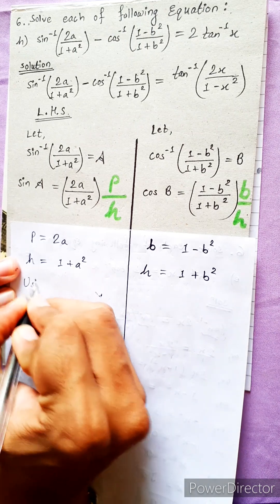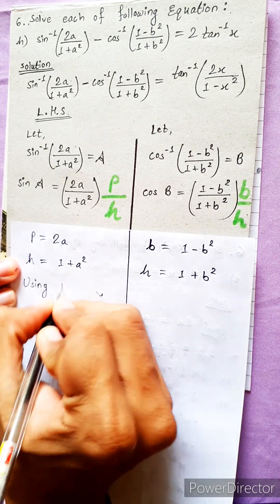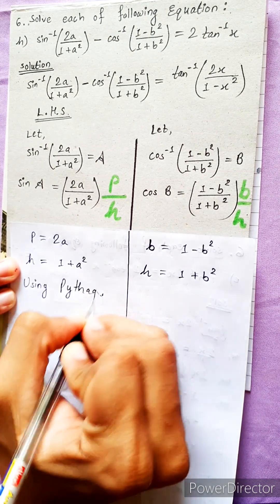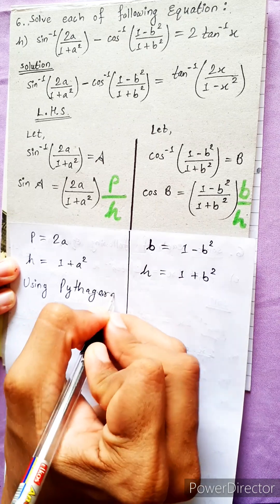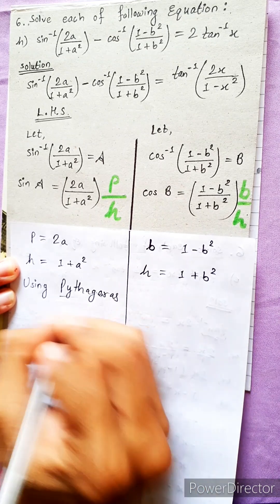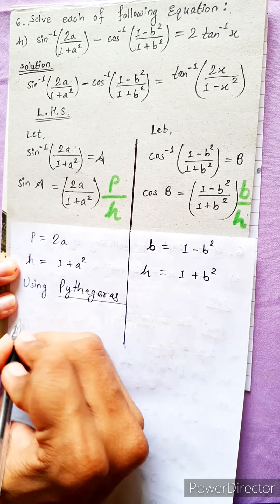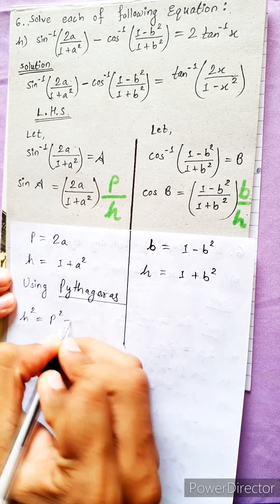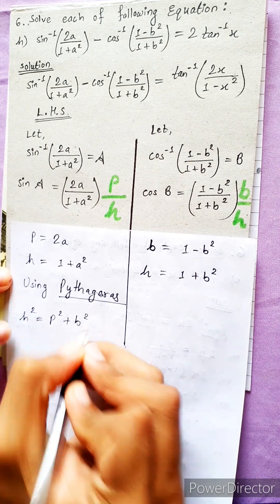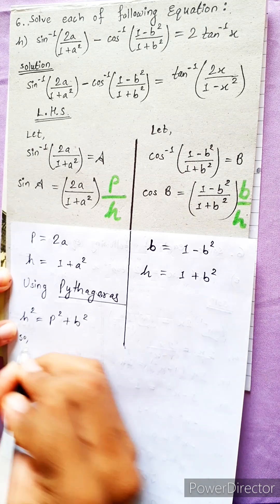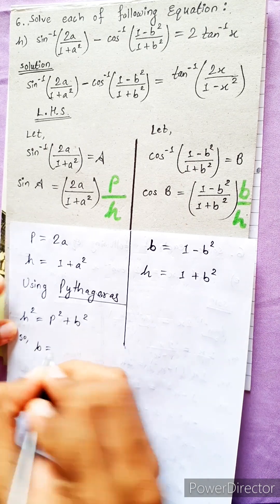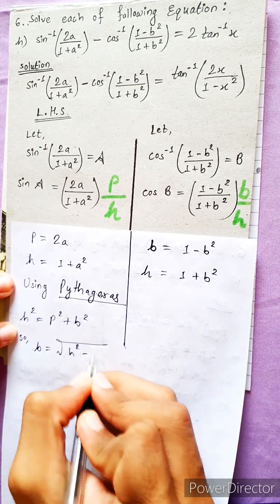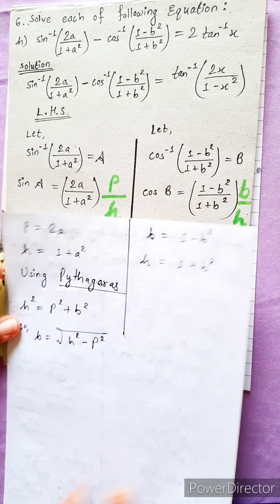Using the Pythagorean theorem: H² equals B² plus P². So P equals the square root of (H² - B²). This gives us sin A and cos B in terms of the triangle sides.